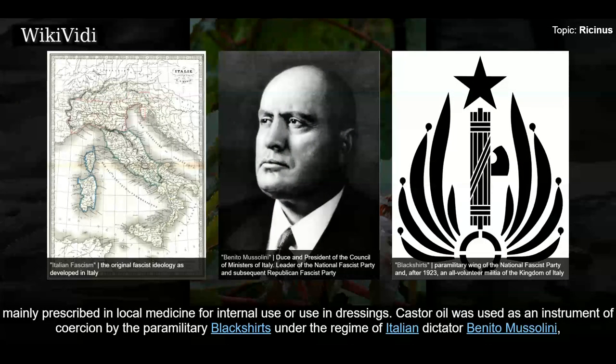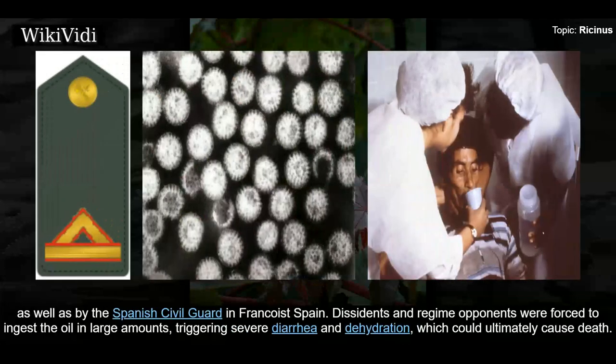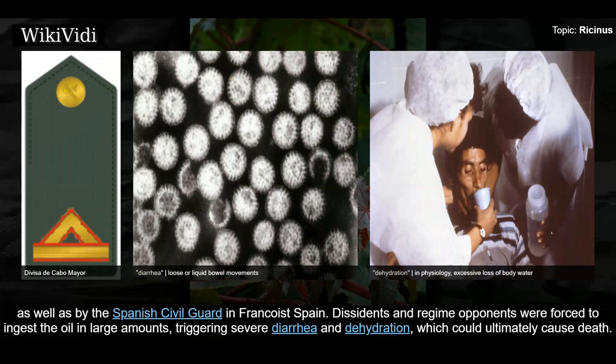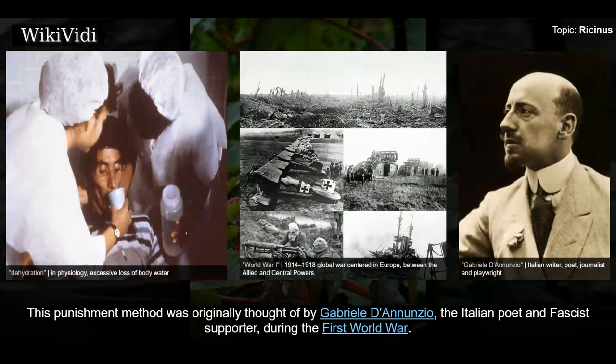Castor seed and its oil have also been used in China for centuries, mainly prescribed in local medicine for internal use or use in dressings. Castor oil was used as an instrument of coercion by the paramilitary Blackshirts under the regime of Italian dictator Benito Mussolini, as well as by the Spanish Civil Guard in Francoist Spain. Dissidents and regime opponents were forced to ingest the oil in large amounts, triggering severe diarrhea and dehydration which could ultimately cause death. This punishment method was originally thought of by Gabriele D'Annunzio, the Italian poet and fascist supporter, during the First World War.